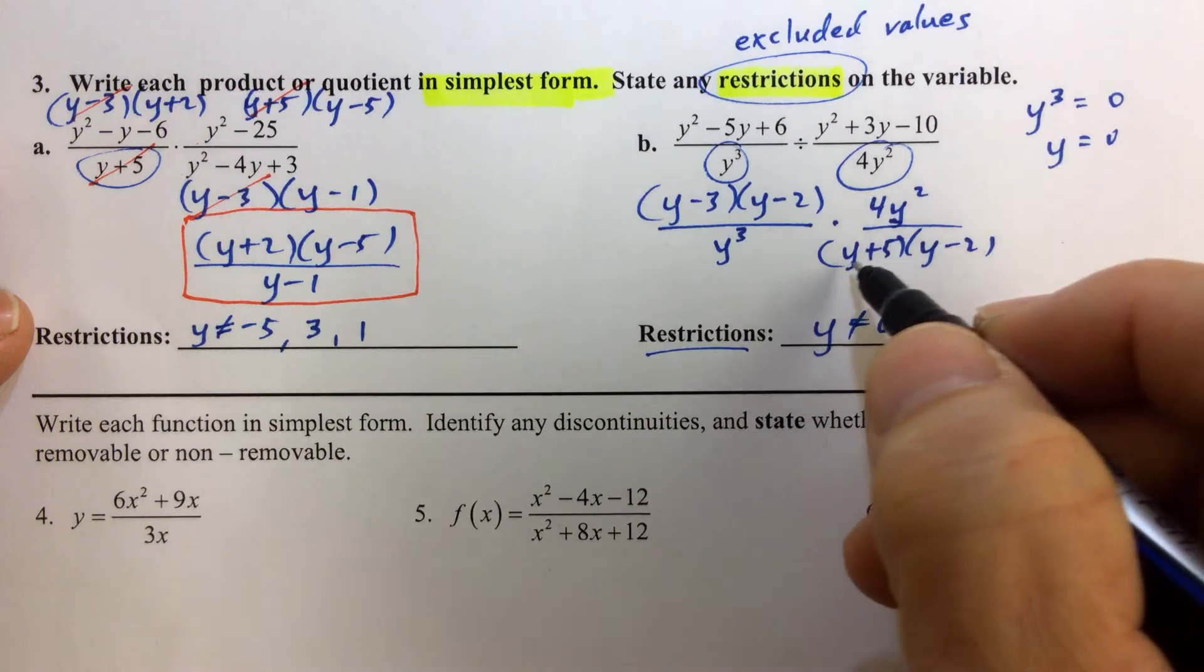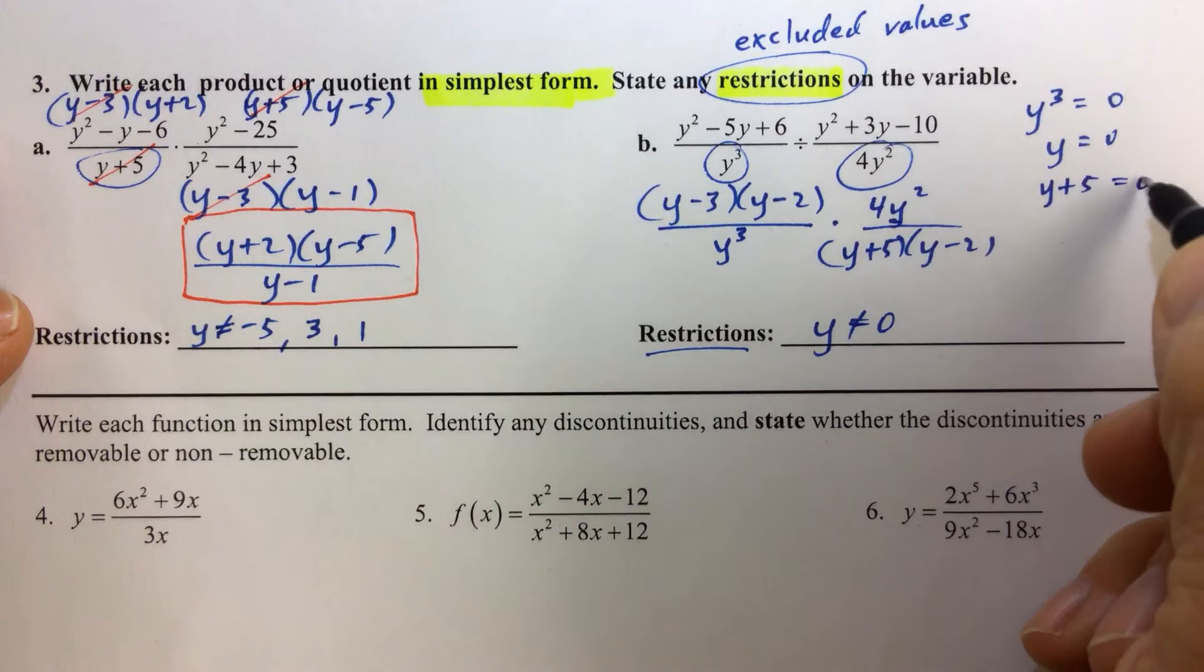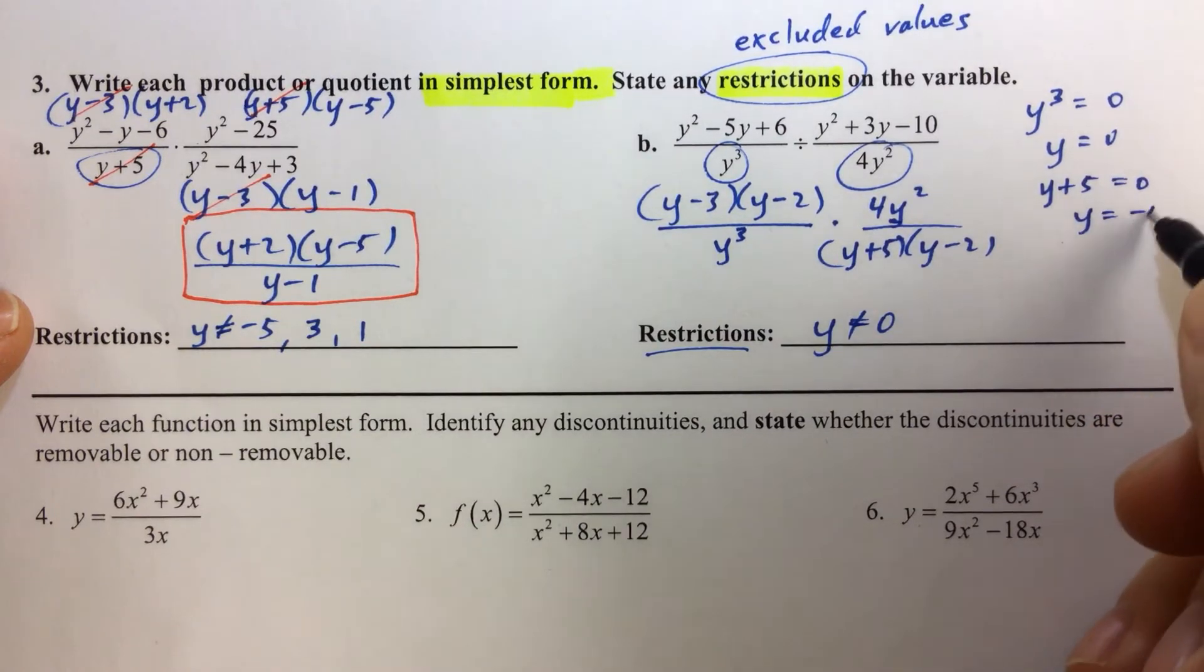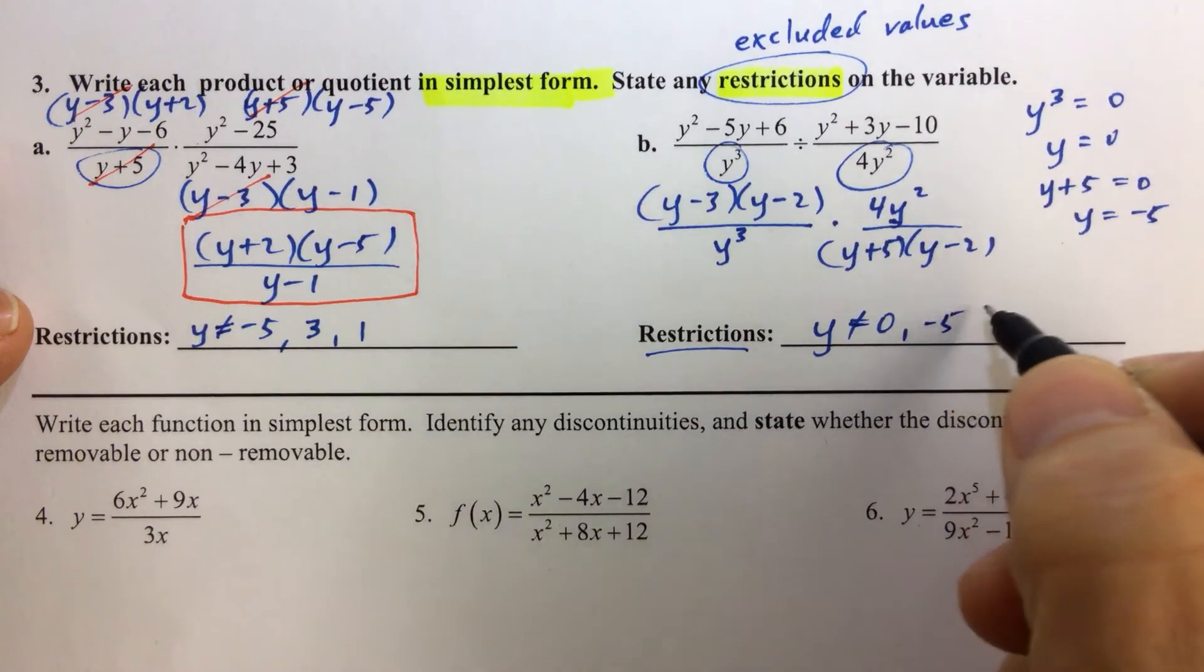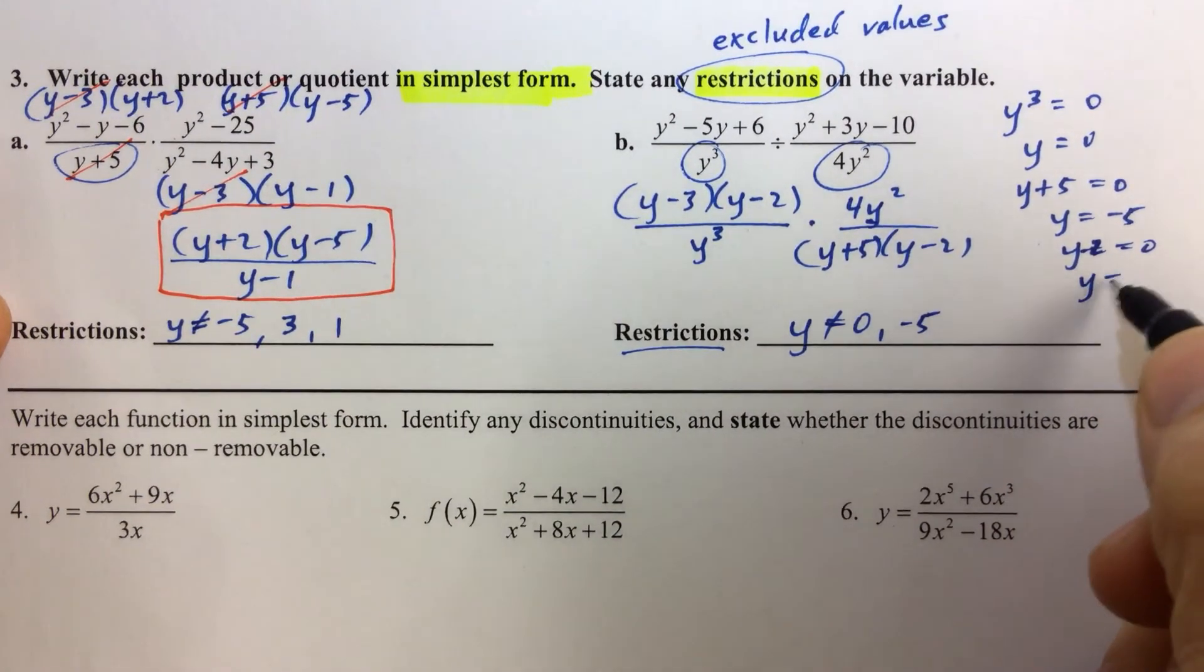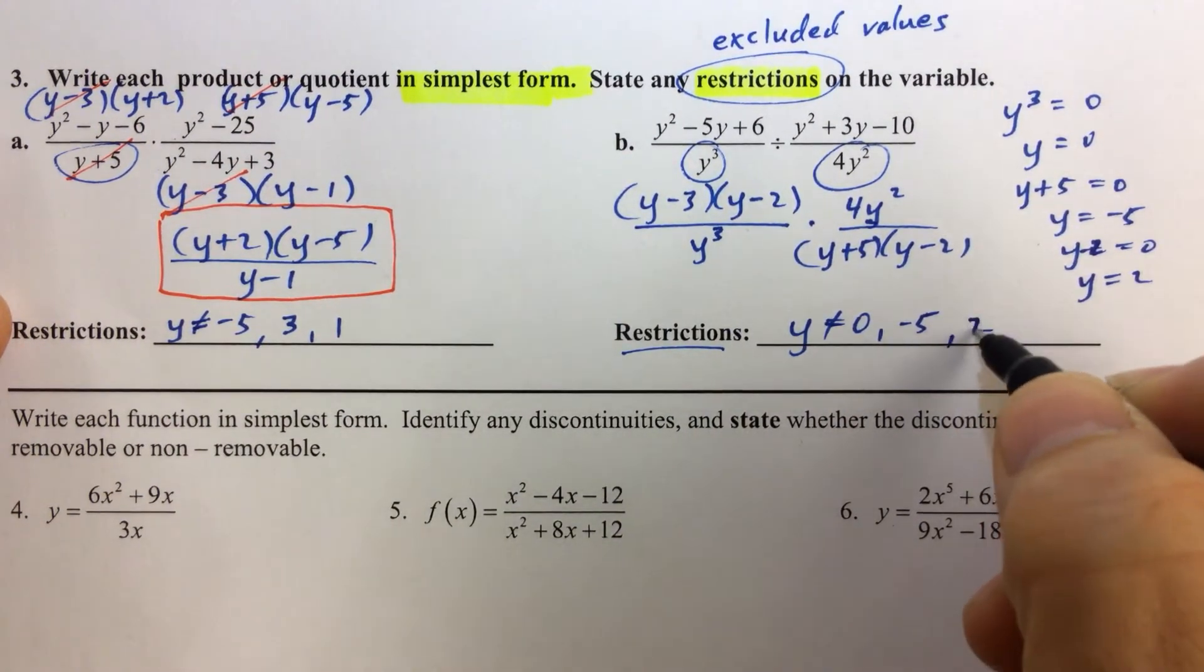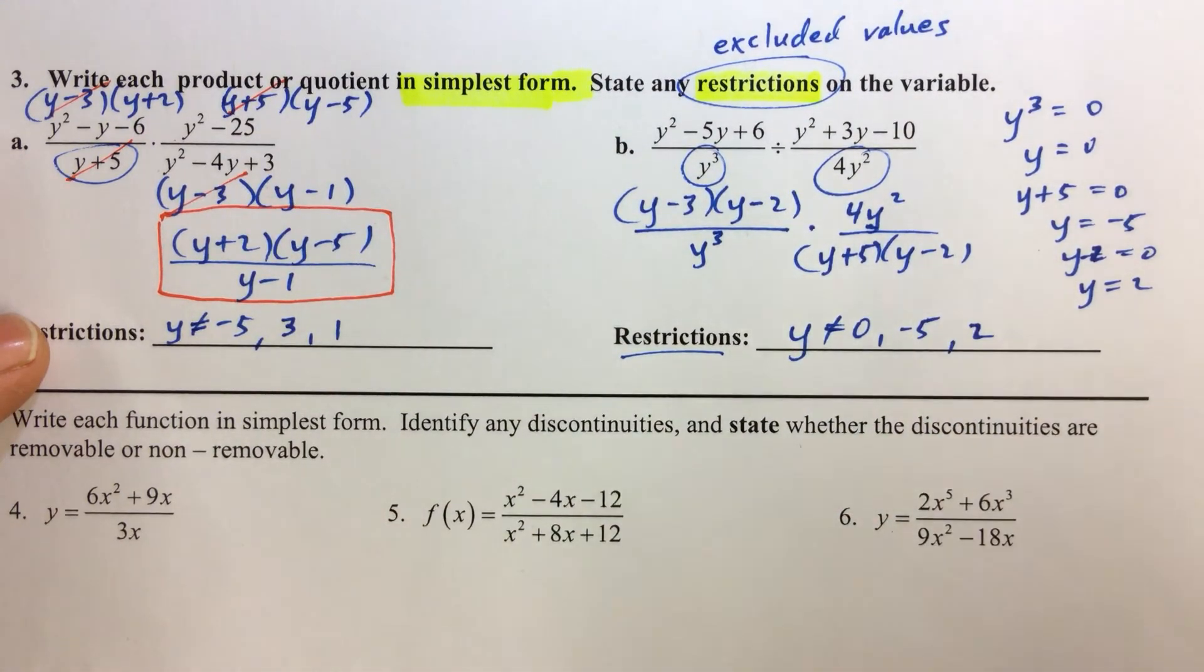We have now a new denominator, and we have to set each factor equal to 0 to find our restrictions on the variable. So y equals negative 5 would make the denominator 0, as well as y minus 2 equals 0, which means y equals 2. So 2 is also a restriction on the variable y.